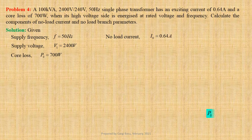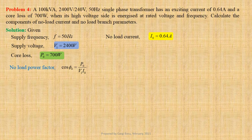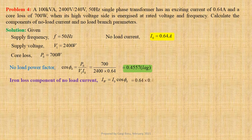No load power P0 equals V1 I0 cos phi 0. Expression for no load power factor cos phi 0 equals P0 divided by V1 into I0. Using values we get 700 divided by 2400 into 0.64, which gives us 0.4557 lagging. Iron loss component of no load current Iw equals I0 cos phi 0, that is equal to 0.64 into 0.4557, which gives us 0.2917 Ampere.